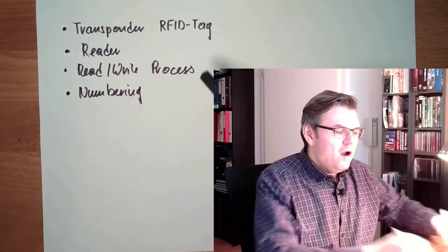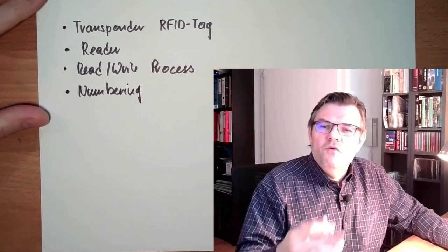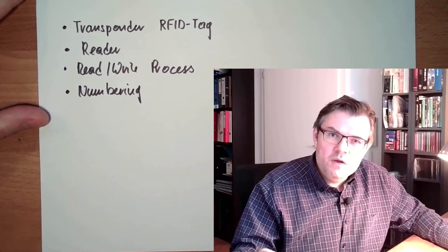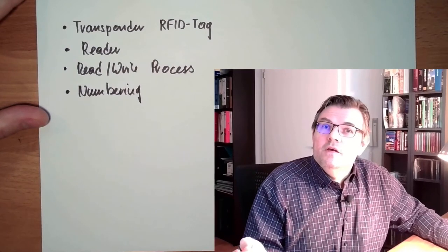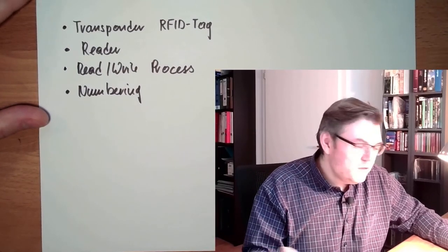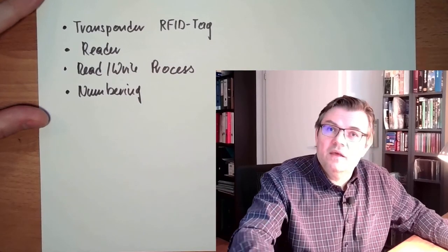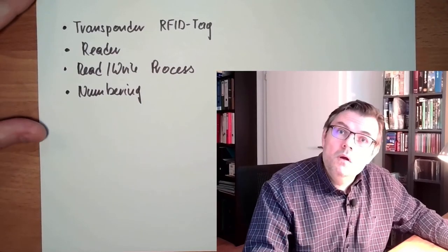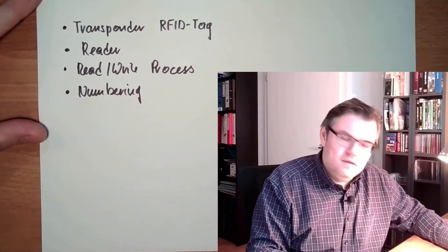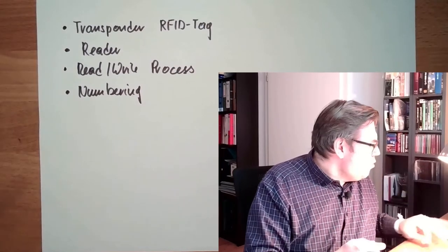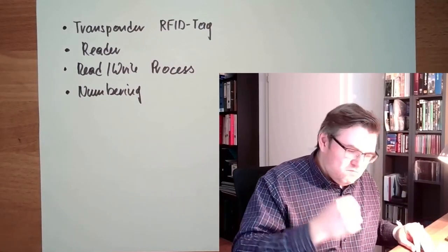And what is also mandatory is some numbering. So the RFID tags, they need to differ from each other. Because if they all look the same, there is no identification, right? If they look like one act like the other, they need some sort of numbering inside. So these are things which are simply there.